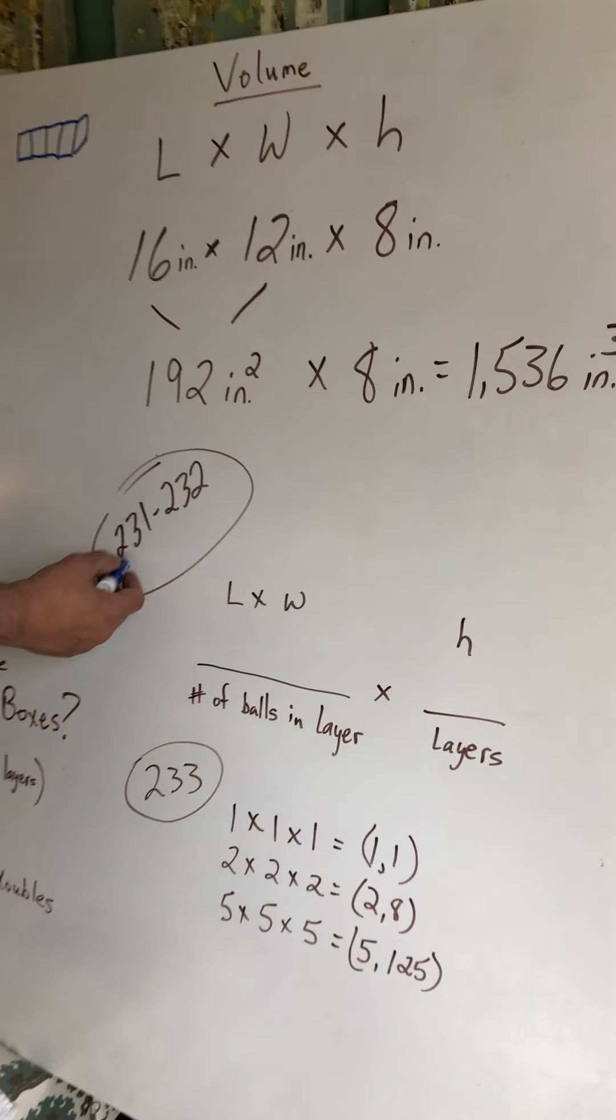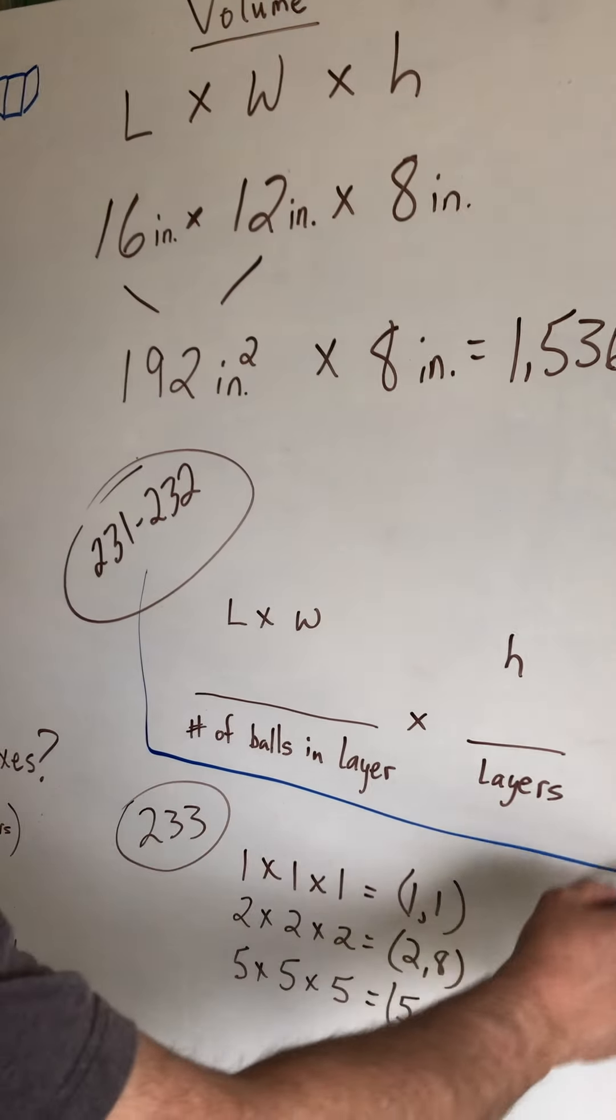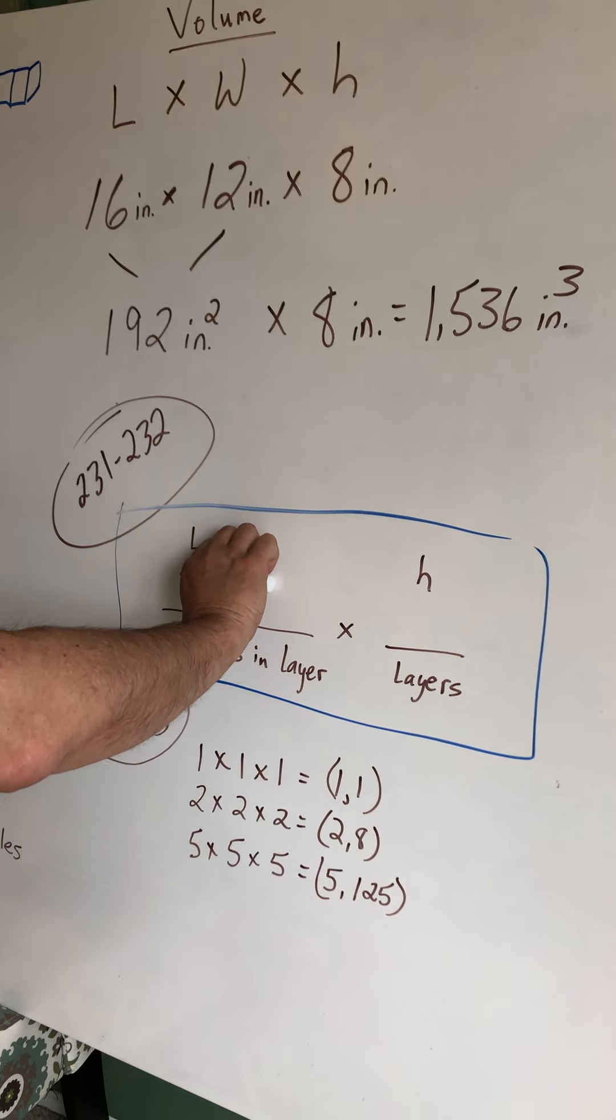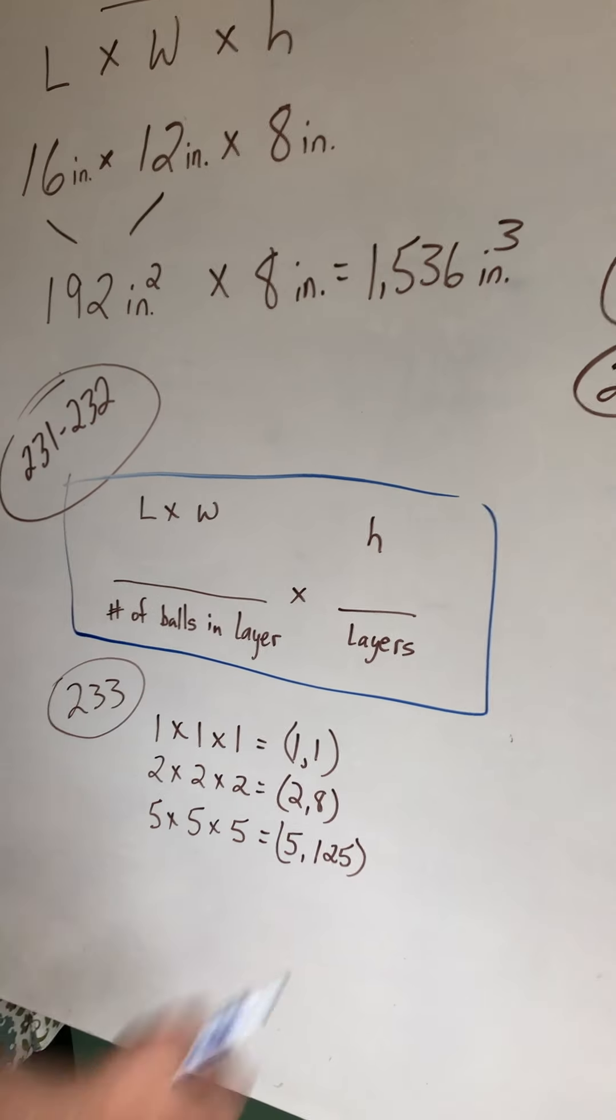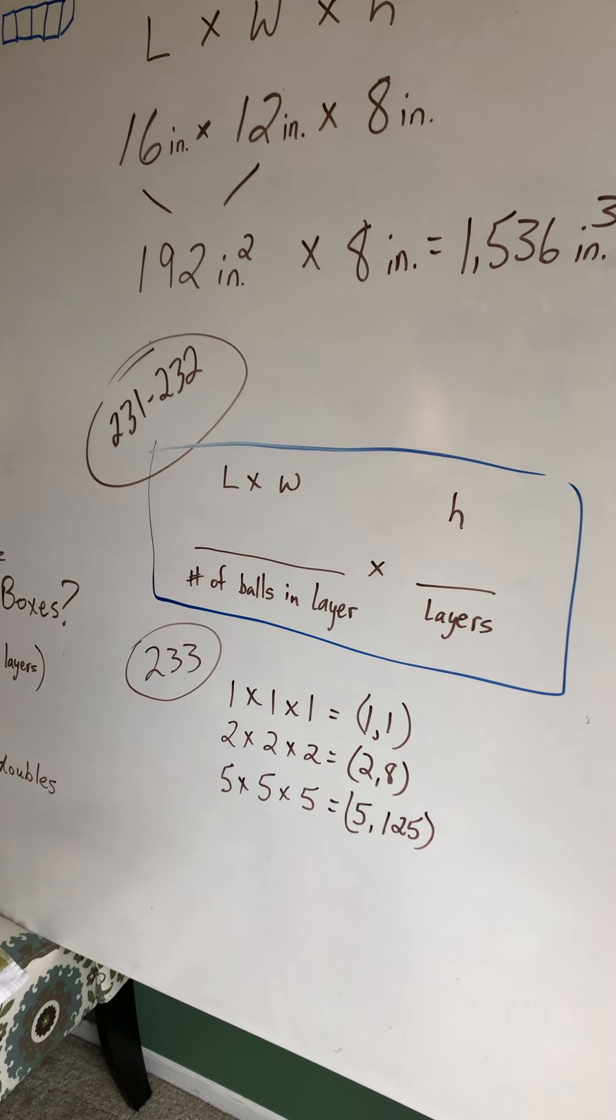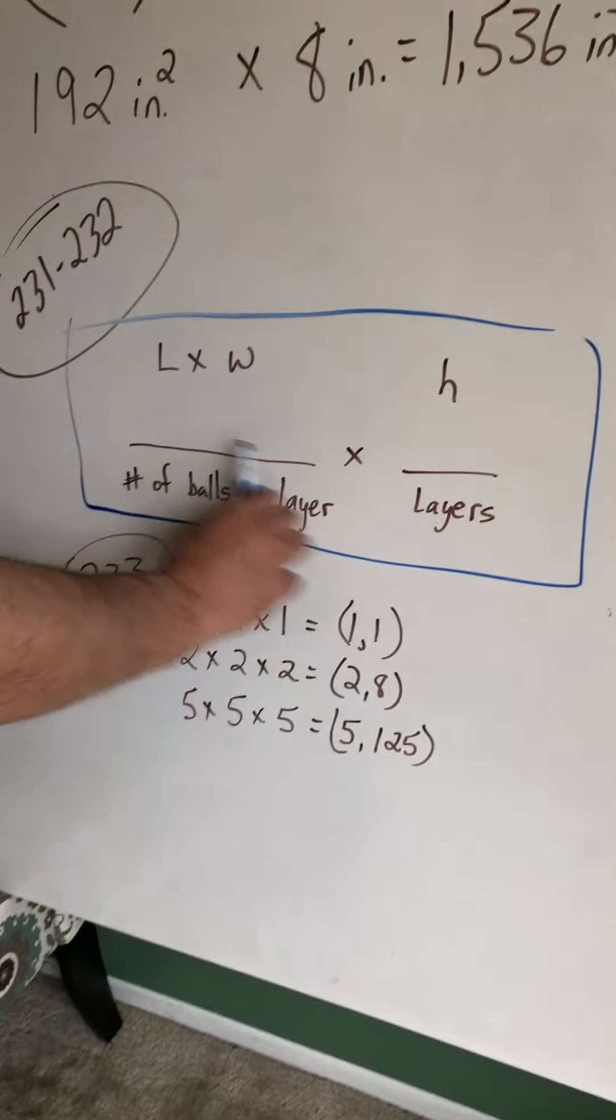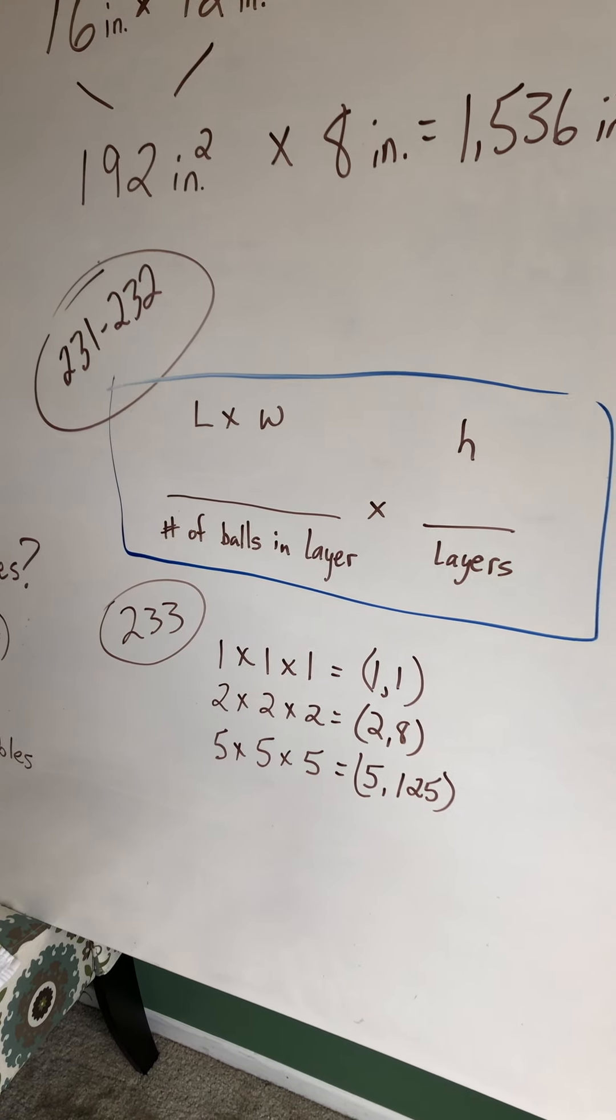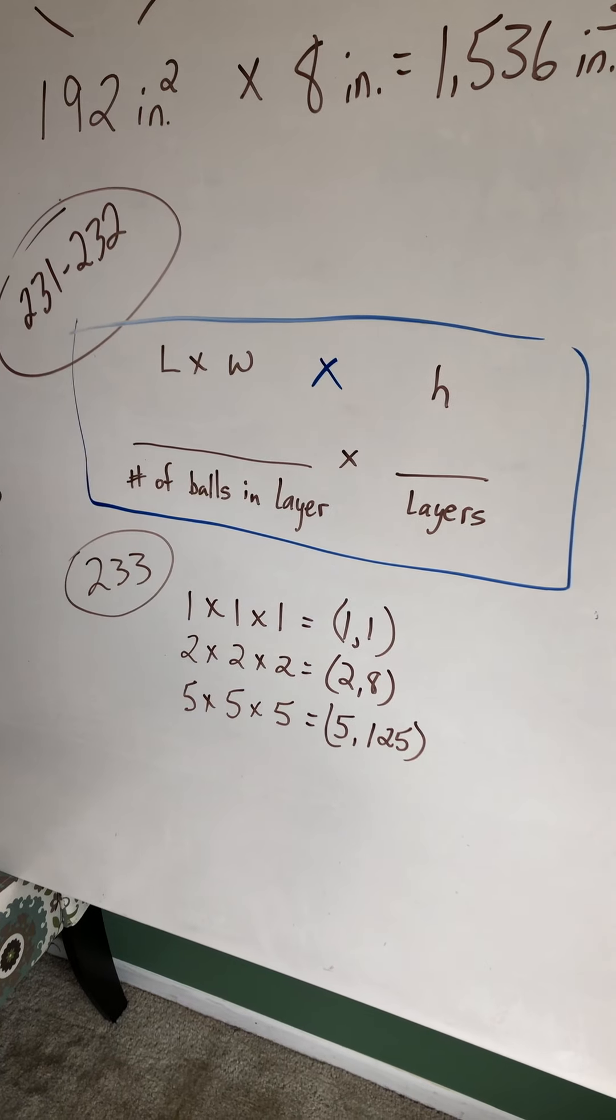On 231, 232, they're doing something like this. And they have this all boxed in. You'll see it when you go to it. They're putting length times width together to give you the number of balls in the layer, the bottom layer. And then the height gives you, after you multiply, will give you the total number in that box or whatever dimensions they give you for each box. This is, for 231, 232, this is pretty much all you're doing. They're making you think about if you put length times width together and then times height.